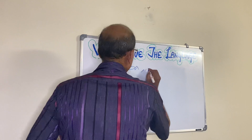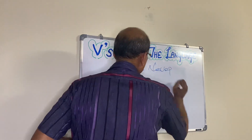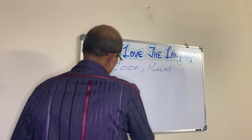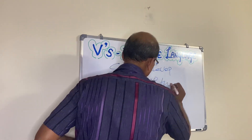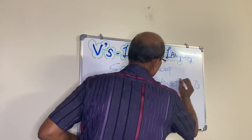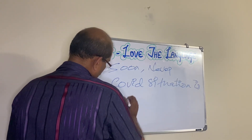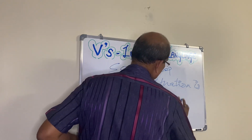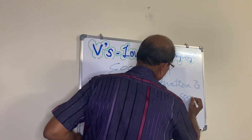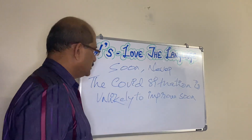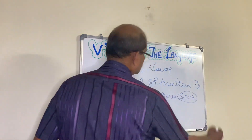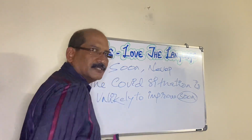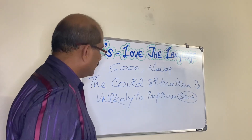The two examples I am going to give you today are 'soon' and 'never.' The COVID situation is unlikely to improve soon. As you know, an adverb of time can come at the beginning or at the end of the sentence. Here it comes at the end: 'The COVID situation is unlikely to improve soon.'